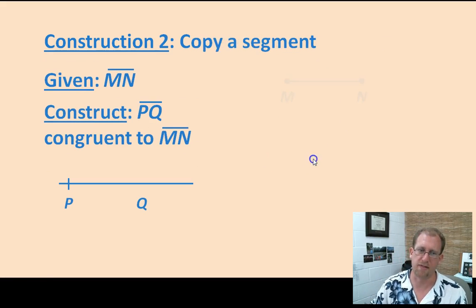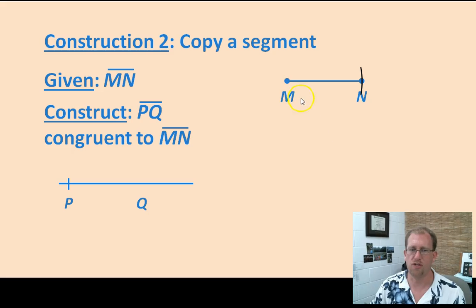How do you copy a segment? Well, you would use a compass and you're supposed to make a segment of exactly the same length as MN. So you put the point of the compass here, put the pencil of the compass here, make a hash mark to demonstrate that you've hit the mark. Then draw a straight line, label point P, and say, I'm going to put the point of the compass there.